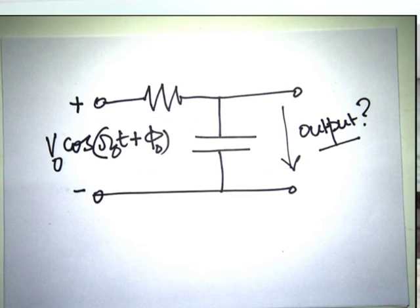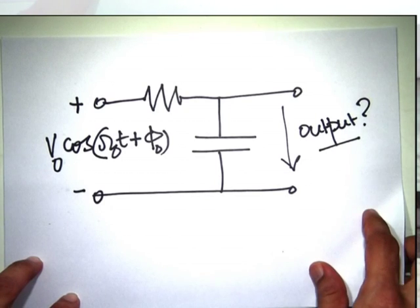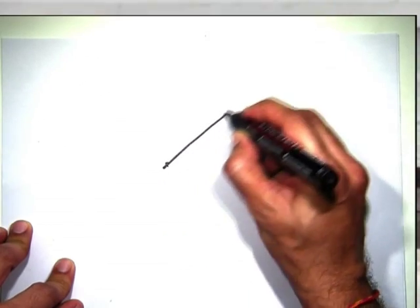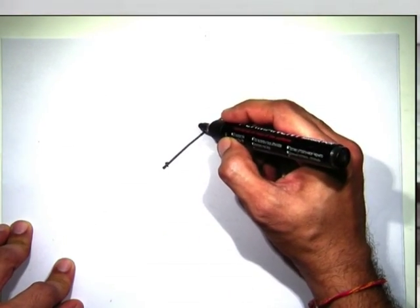If you construct a circuit out of resistances, inductances, and capacitances and excite it with a sinusoidal source, the result is sinusoidal all over the circuit. Now, suppose I connect a resistance and a capacitance in series and excite this pair of terminals with a sinusoidal source — say v₀·cos(ω₀t + φ₀) — and my objective is to find the output. The first thing to do is to establish a methodology for obtaining this output.